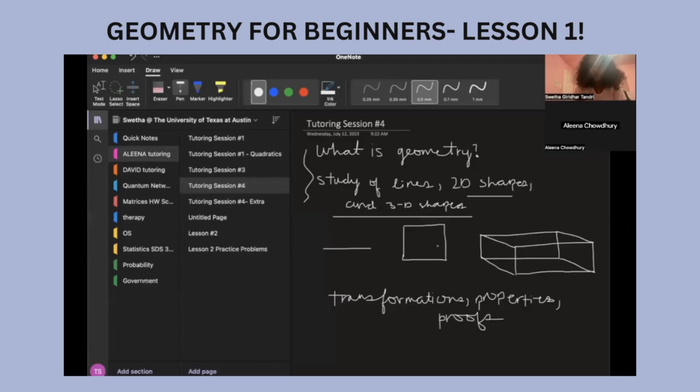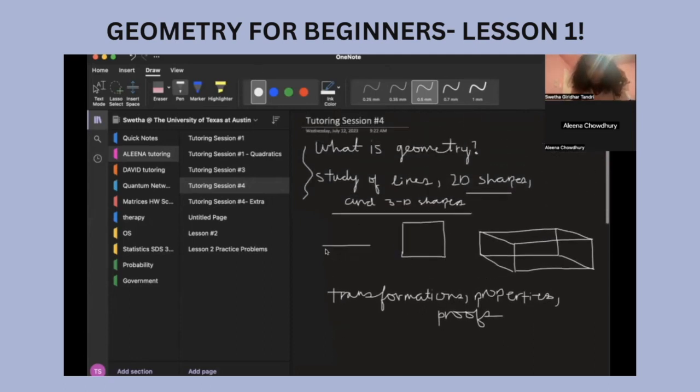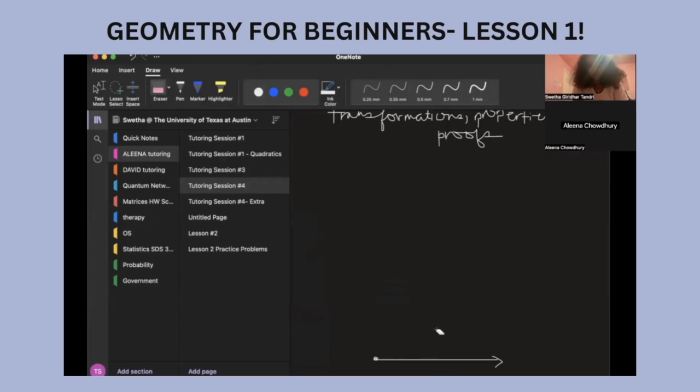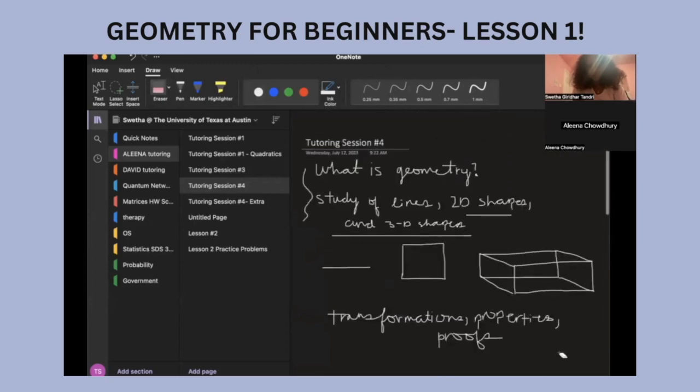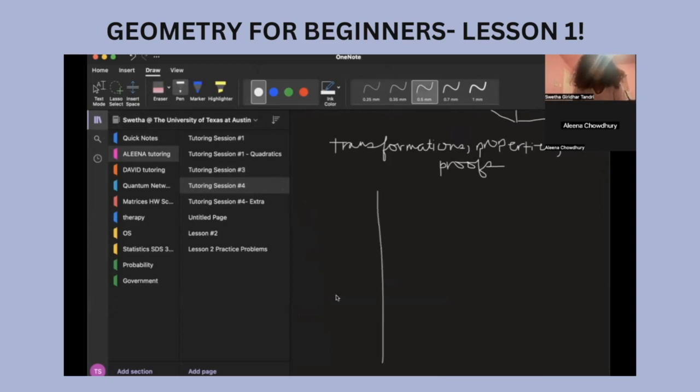So the most important thing in geometry is, here I drew like a line, a 2D shape and a 3D shape right here. Back in algebra, what we did was we covered, I'm just erasing these for now, what we covered in algebra was this, right? This is known as the coordinate grid. And we obviously spend a lot of time on algebra doing this and we have the X axis, the Y axis.